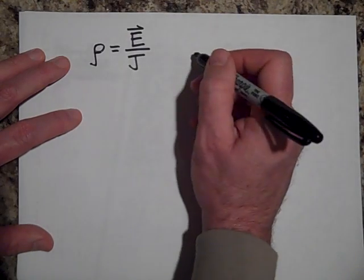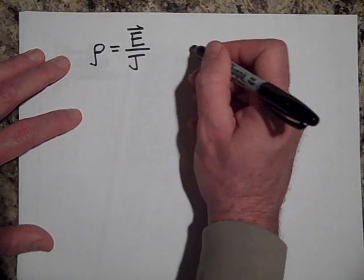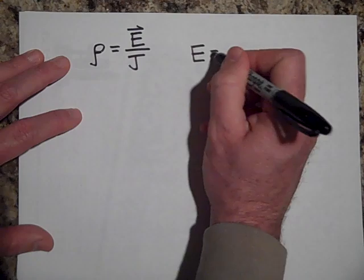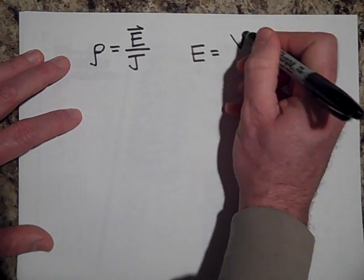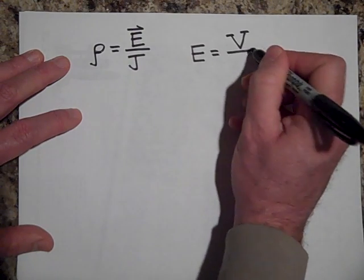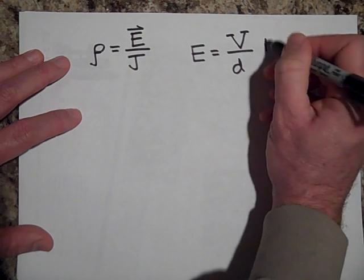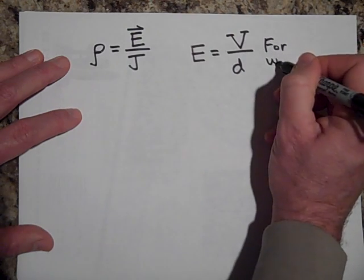And electric field is the voltage divided by the distance, but only for uniform fields.